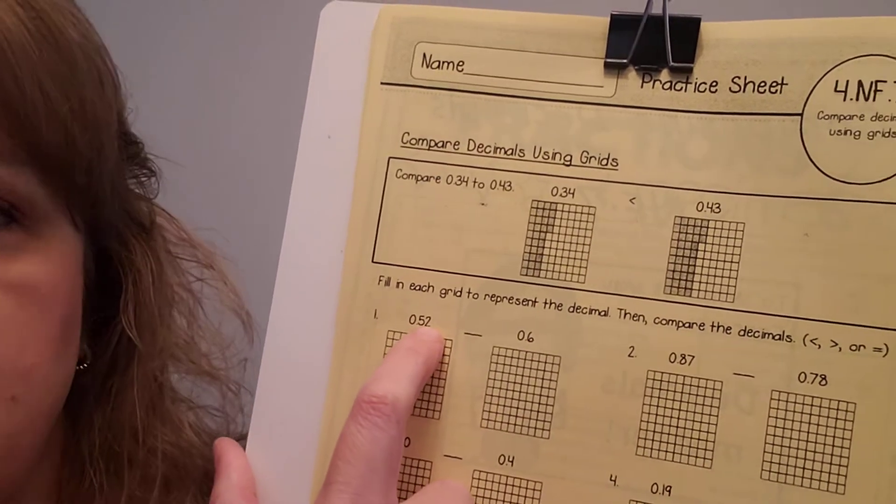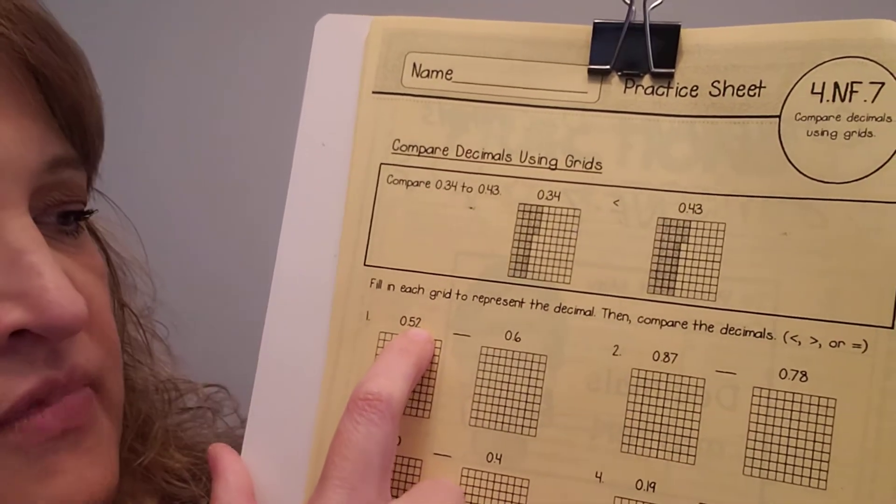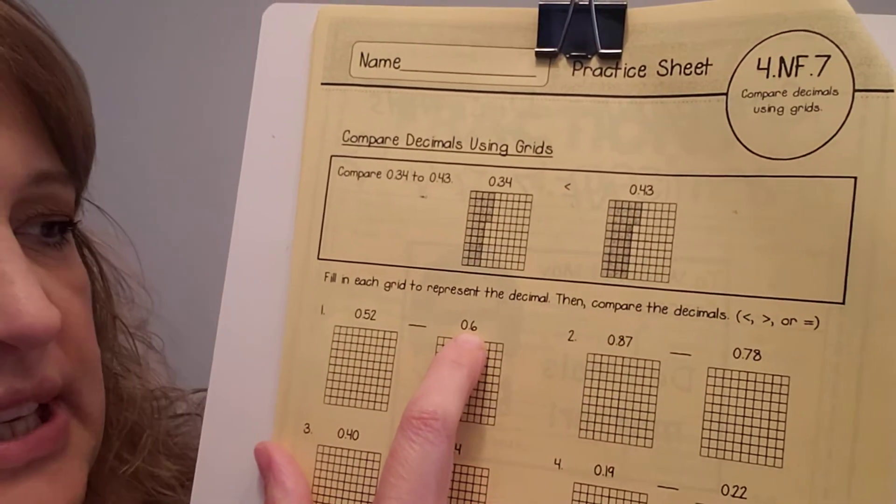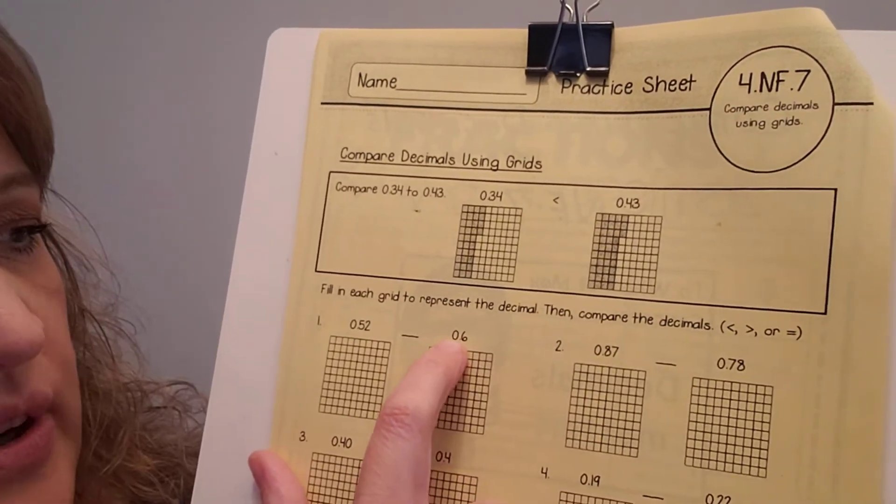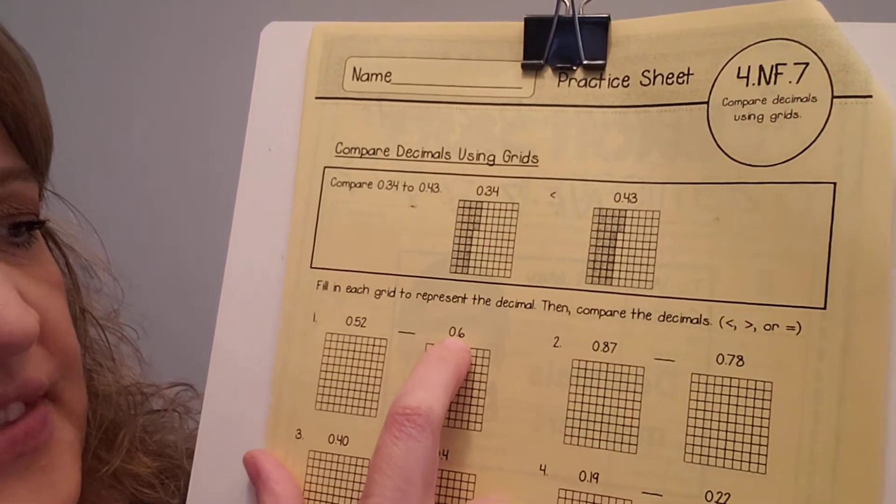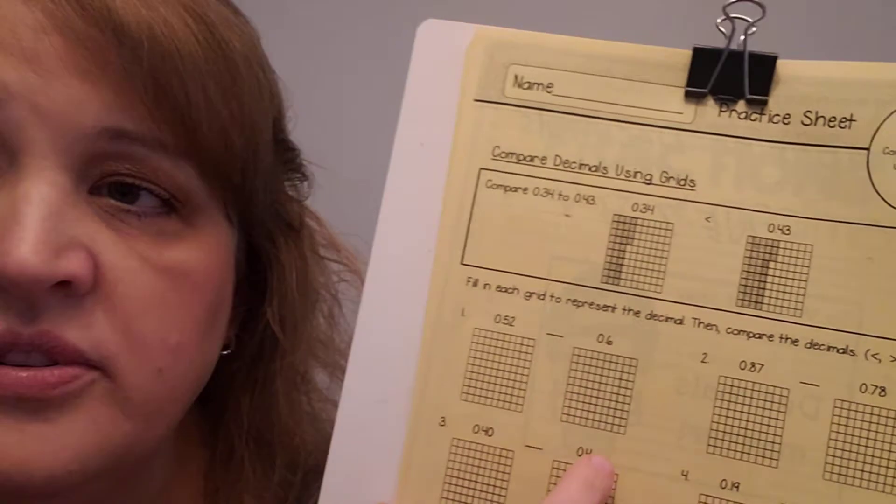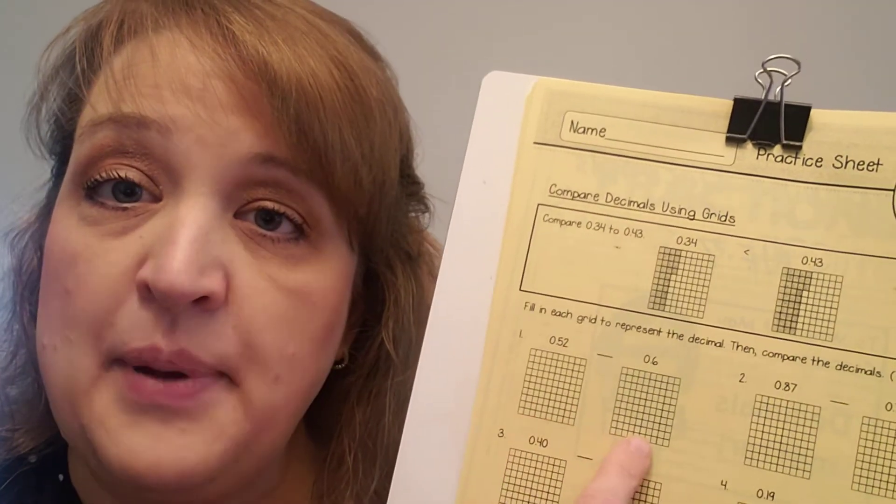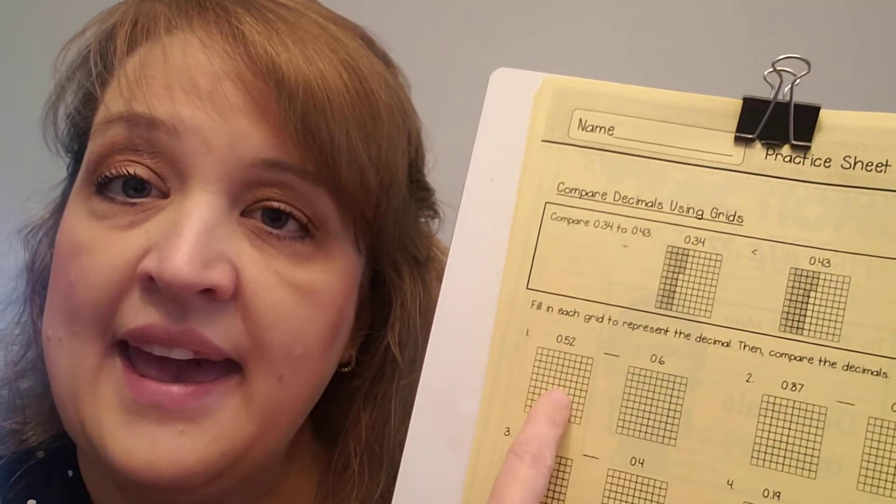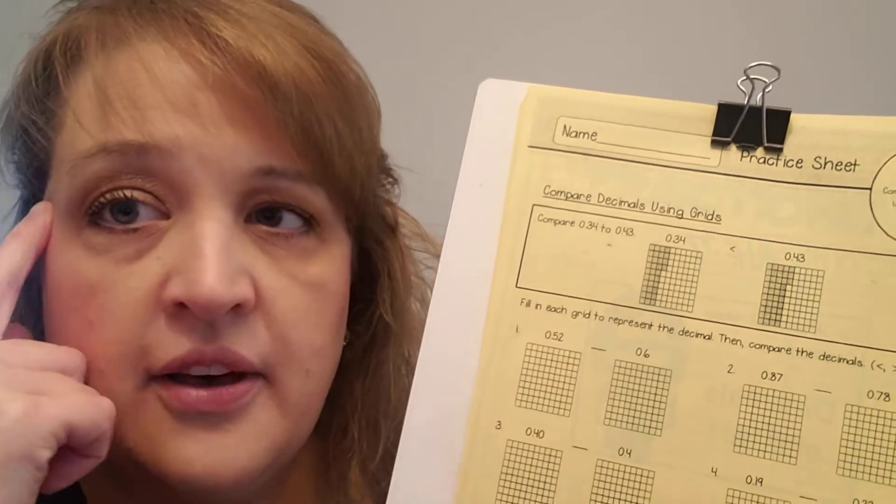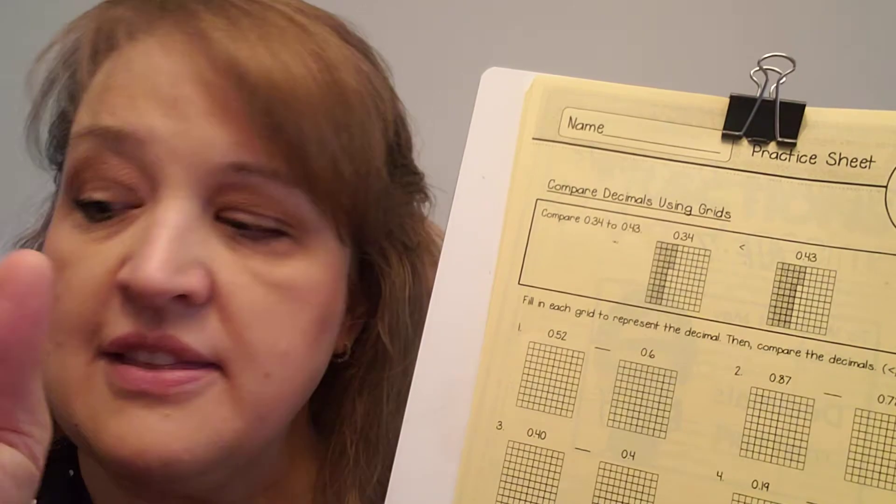That means that this number goes to the hundredths place, but if we look over here, we are only to the tenths place. This is zero whole numbers, and then six is only to the tenths place. In order to compare two decimals, we need to have them being compared to the same thing. I can't compare this one in the hundredths to this one in the tenths without thinking about making them the same.